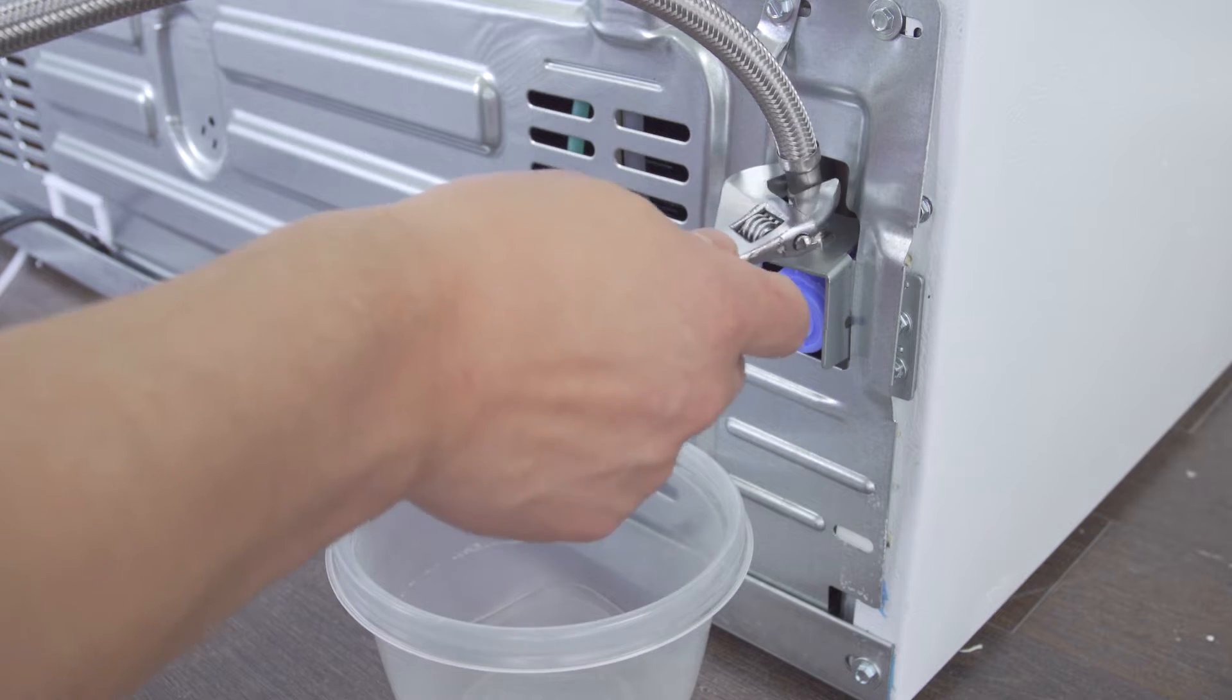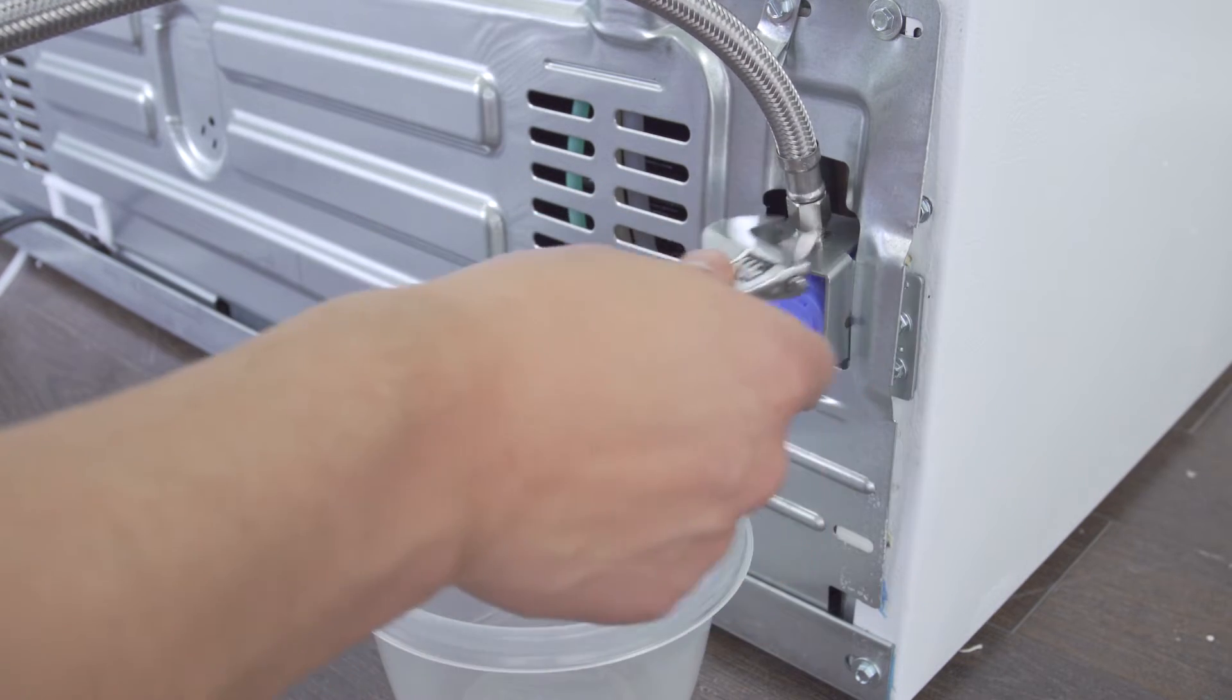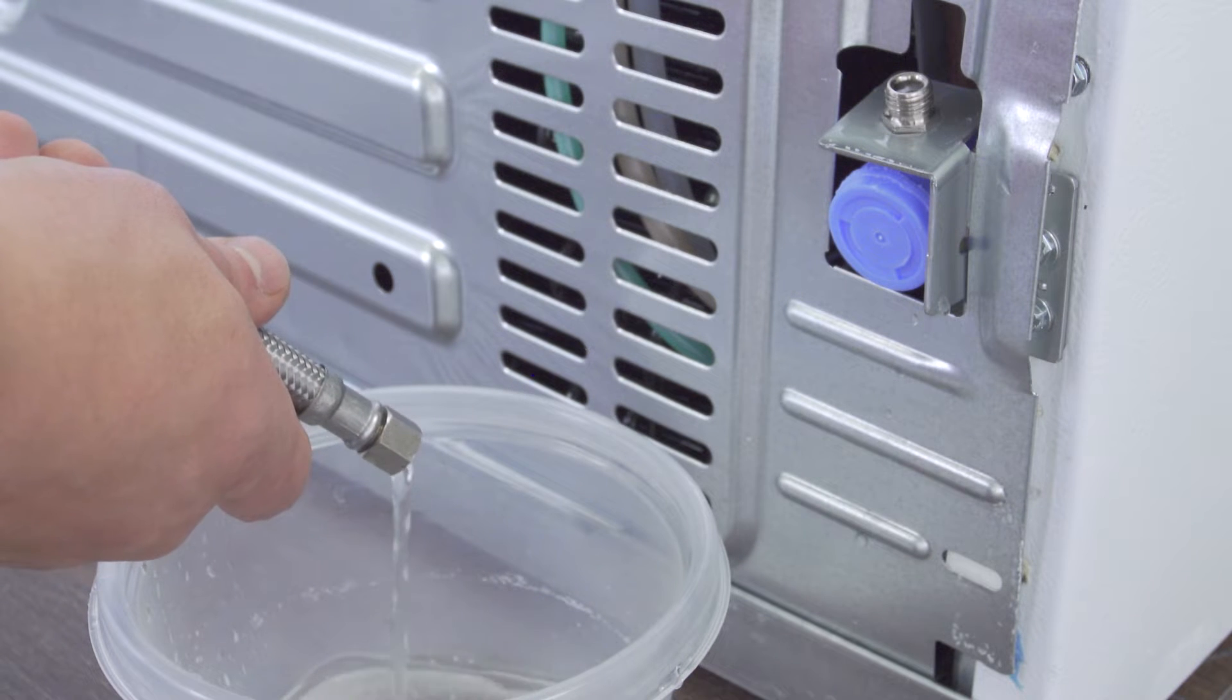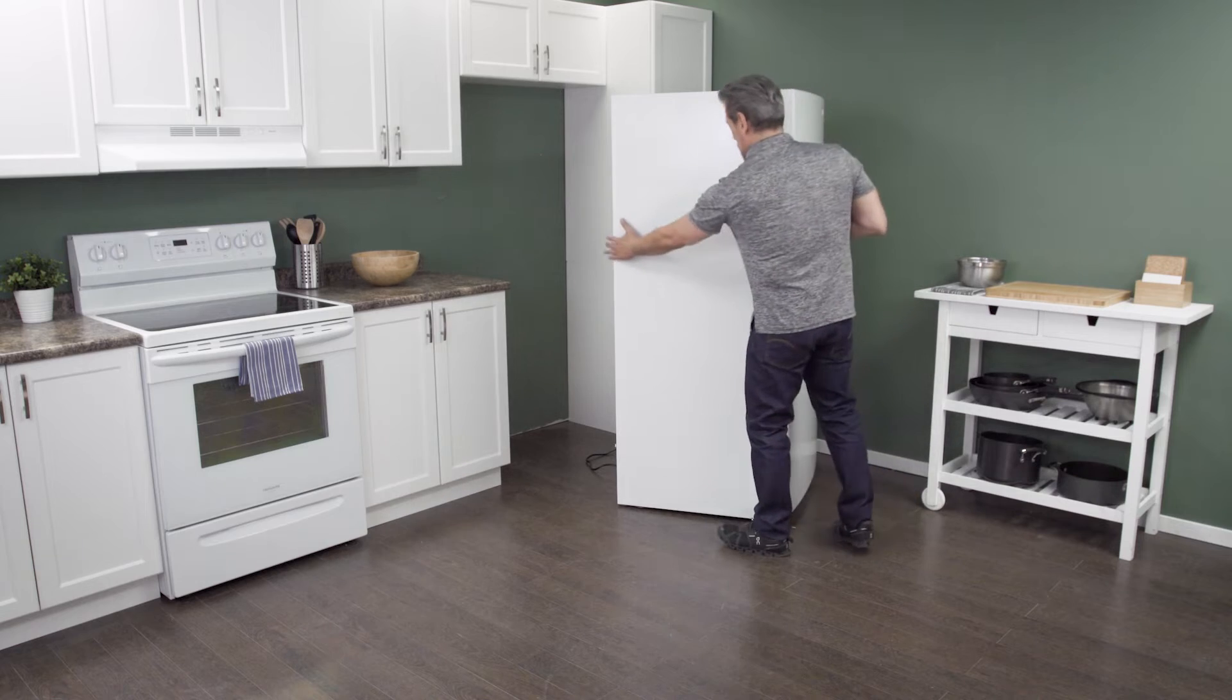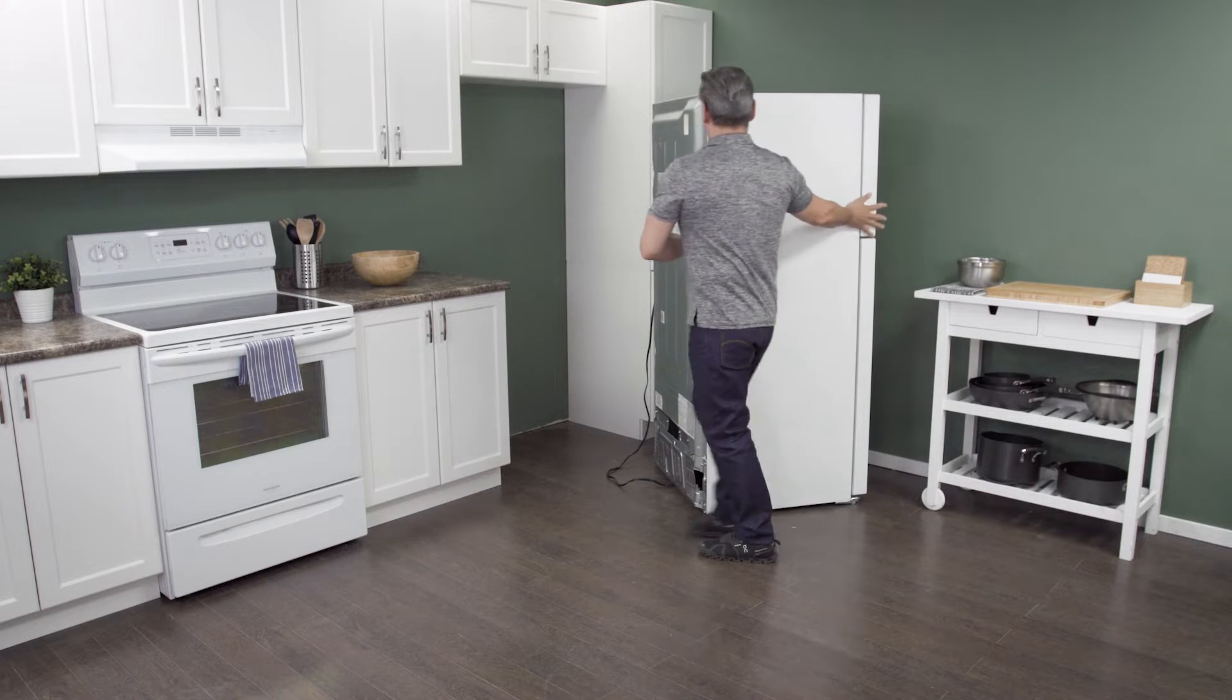Next use an adjustable wrench to loosen and remove the supply line. Let any remaining water drain into a plastic container. Now slide the fridge all the way out so you have plenty of room to work.